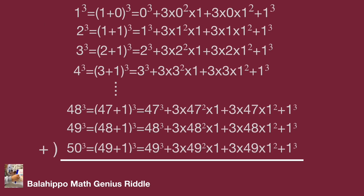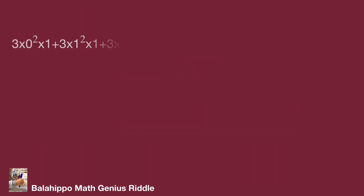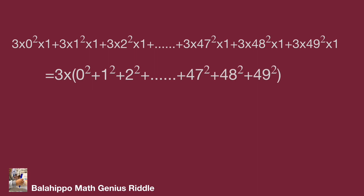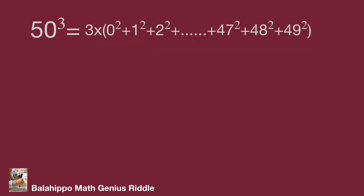Next, look at the 3 times n square times 1 item sections, which are on the right side of the equations. The sum of these items becomes 3 times bracket (0 square plus 1 square plus 2 square plus dot dot dot plus 48 square plus 49 square) bracket. The item 1 square plus 2 square plus dot dot dot plus 48 square plus 49 square is the question we want to find. Put the result into the right side of the equations.